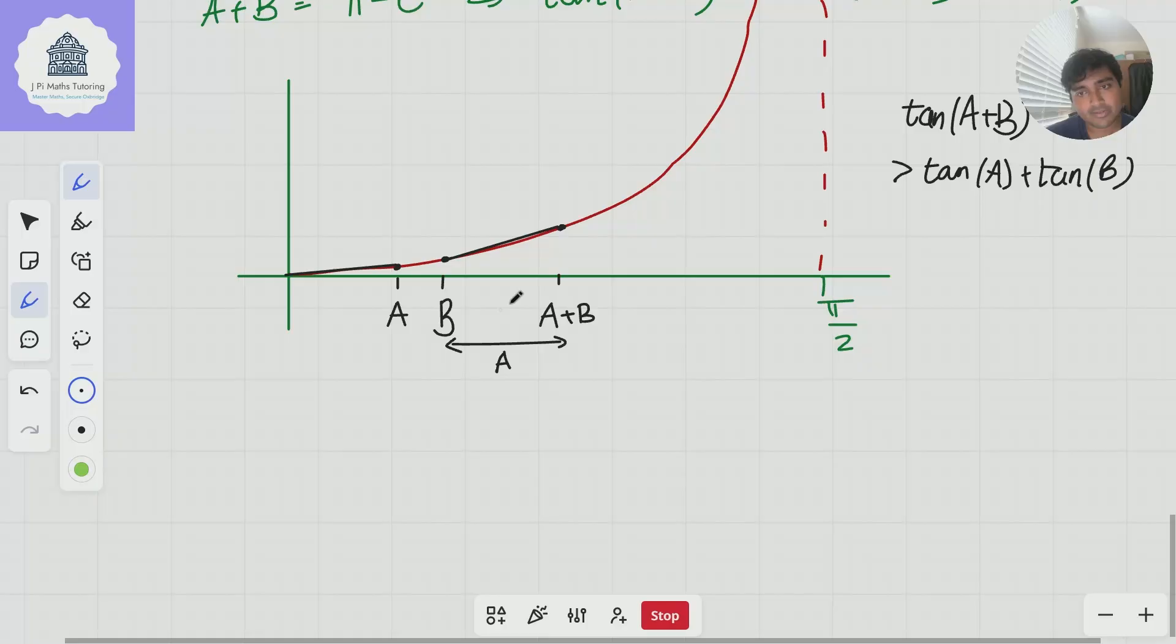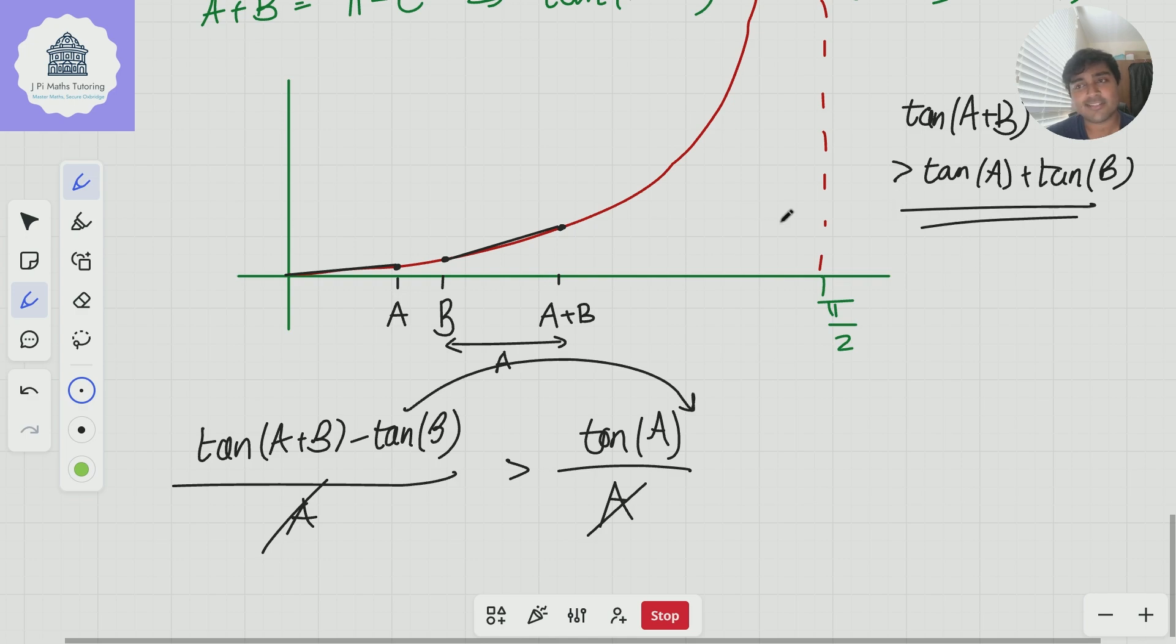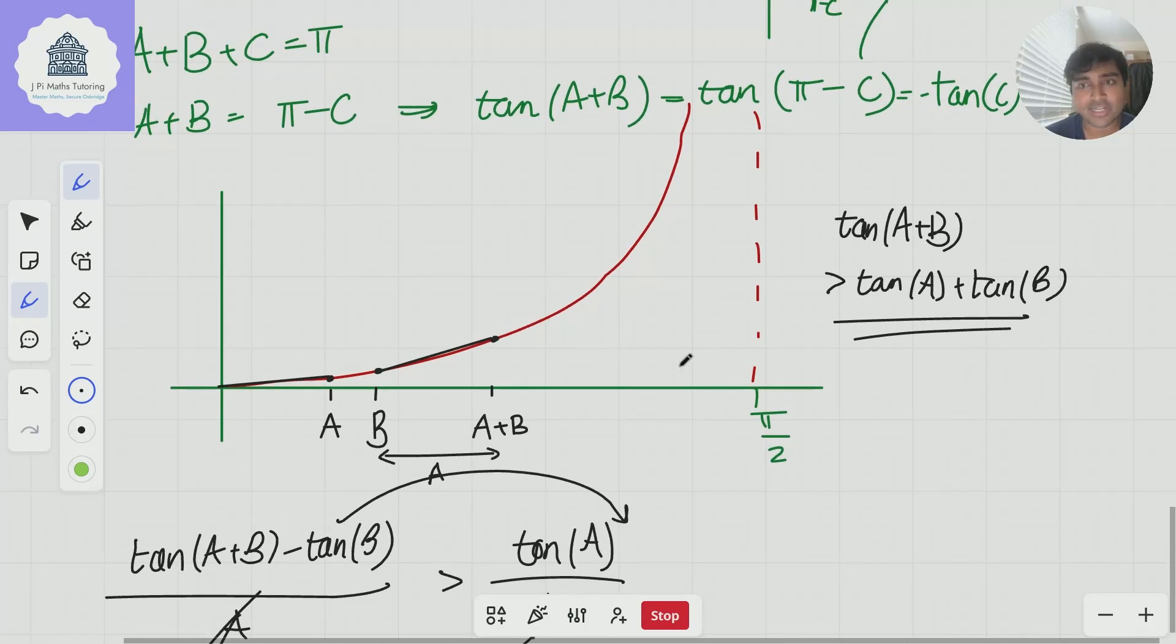And now, if we just work out the gradients of these, we'll get a very nice result. So using this observation that this line is steeper than that line, we get the gradient here. So [tan(A+B) - tan(B)]/A is greater than [tan(A) - tan(0)]/A, which is 0. And if I cancel the A's from both sides, I get tan(A+B) - tan(B) > tan A. Move that onto that side, I get this result here.